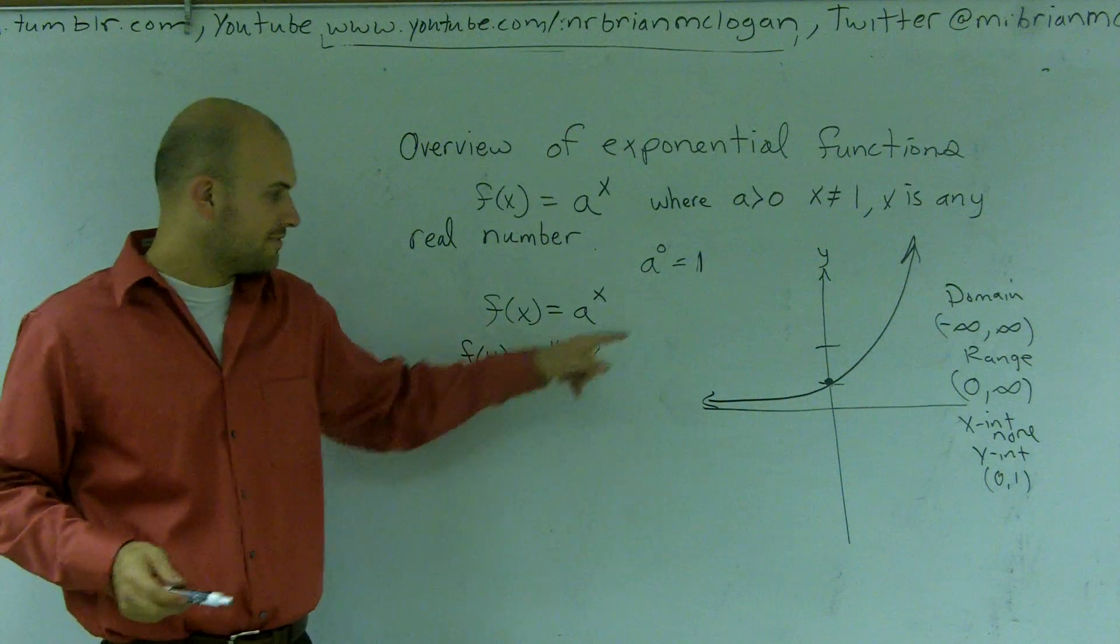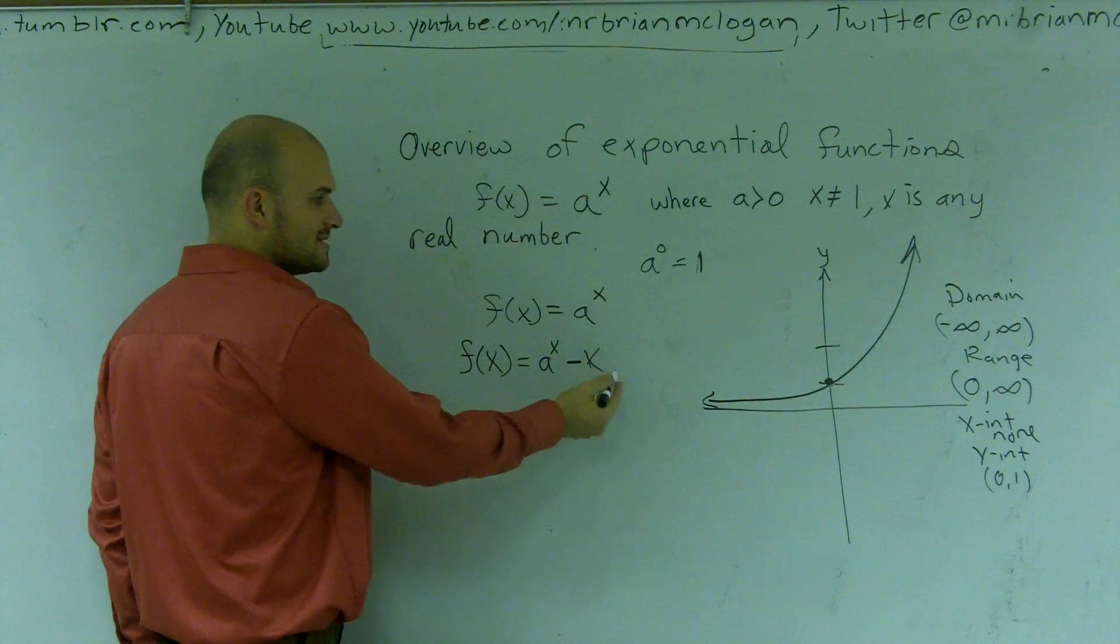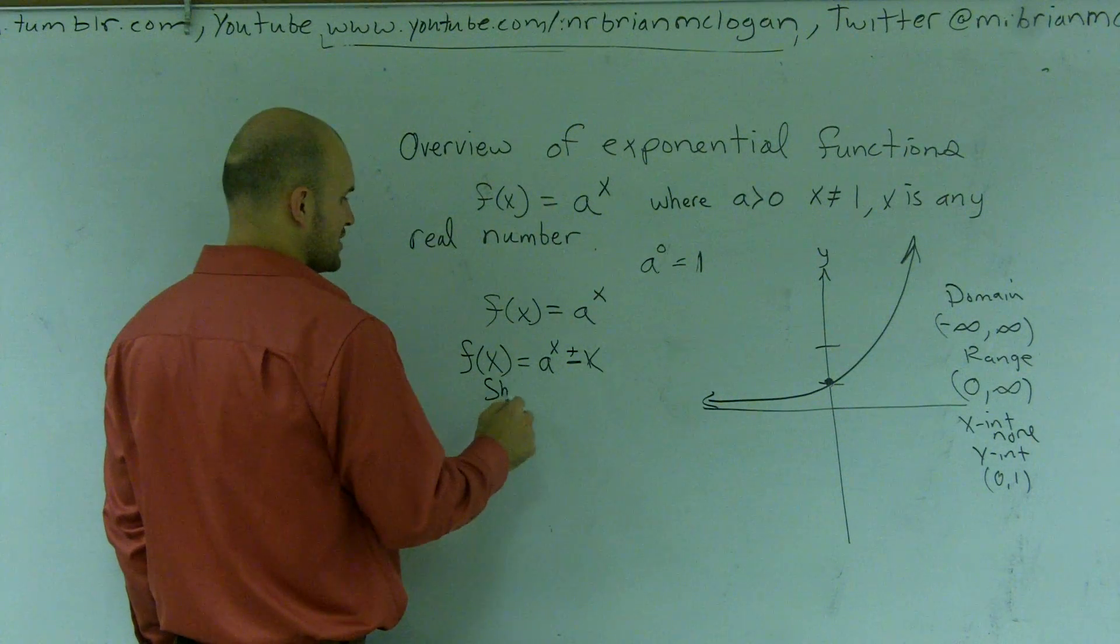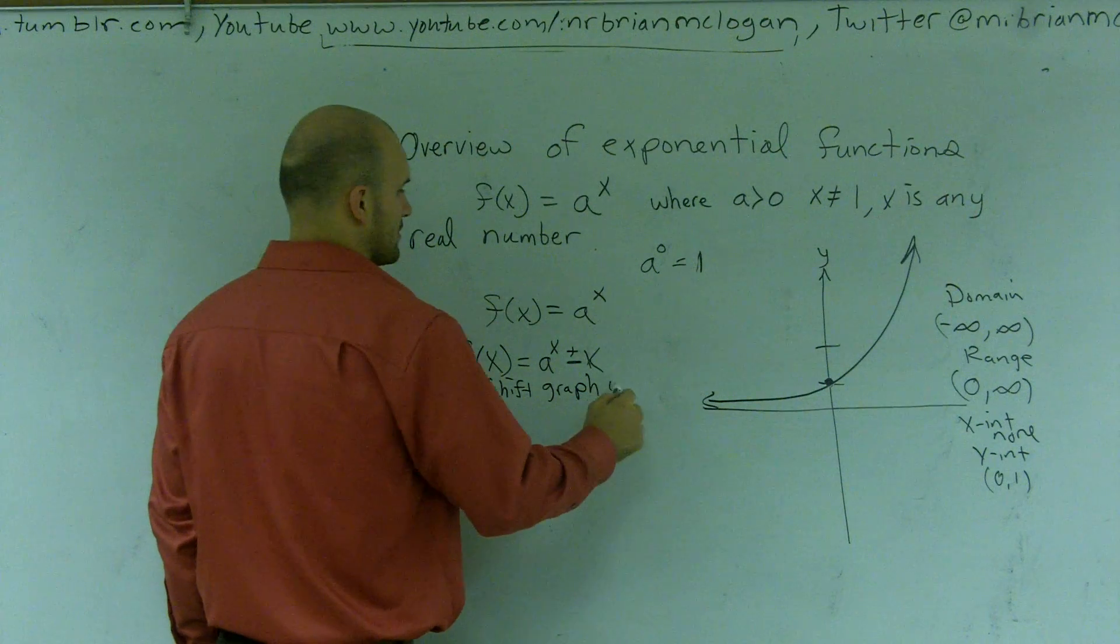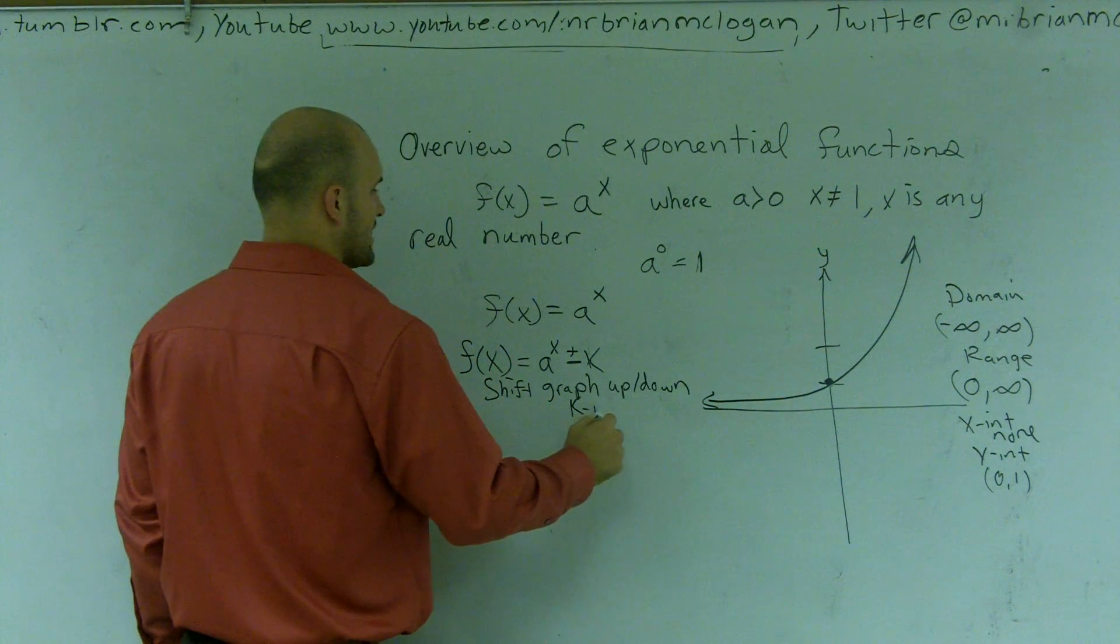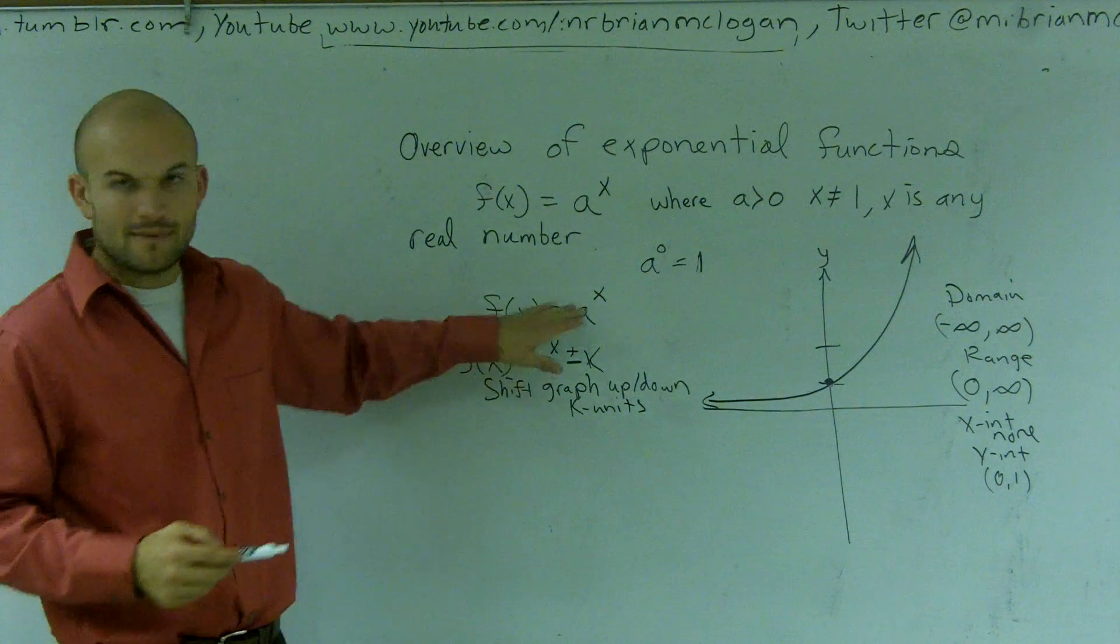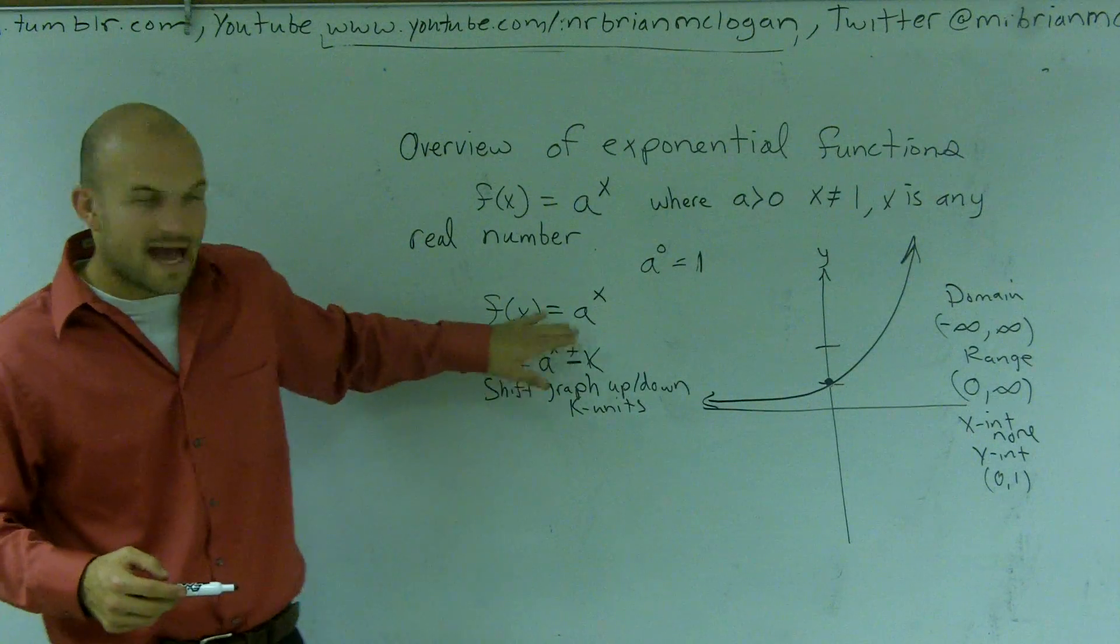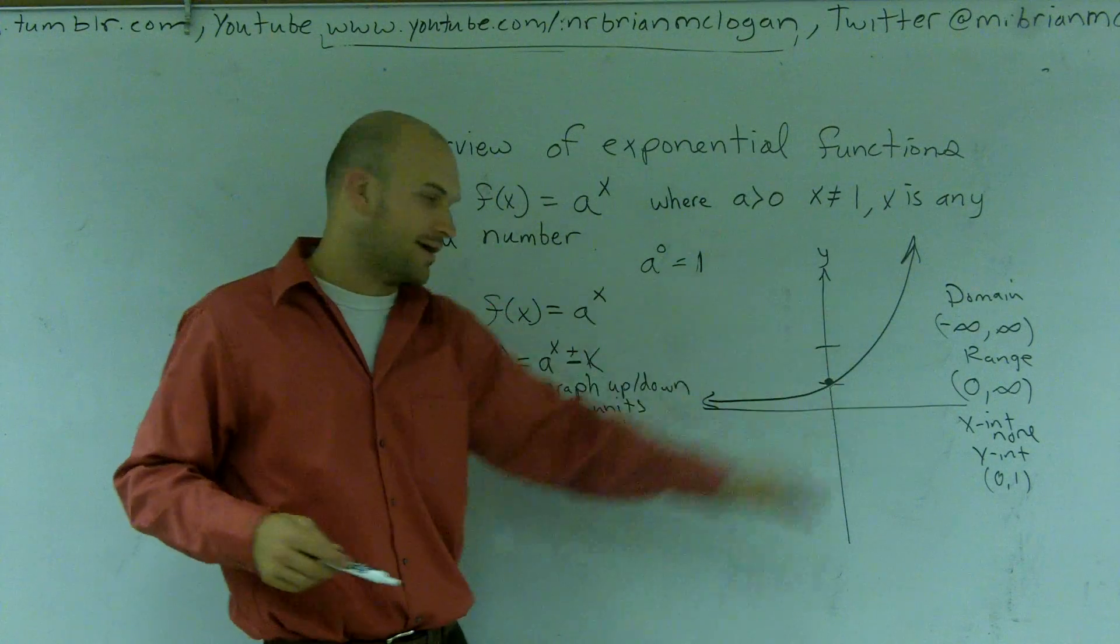a to the x plus k. Well, this is going to shift my graph up k units. This is going to shift my graph down k units. So I'm just going to do a plus or minus, and what this will say is shift graph up or down k units. So whatever my function is, a to the x, whatever up there, if I add a number outside of that, that's going to tell me to shift this graph up or down.